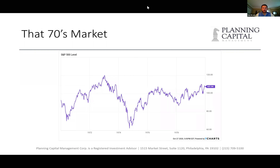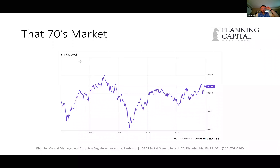If you just take it from the perspective of this chart of the market in the 1970s, we're talking about comparing to the stagflationary environment — essentially high inflation and low economic growth. Not exactly what you want to be caught in the middle of. You can see from this chart that type of environment is high volatility, moving around a lot.